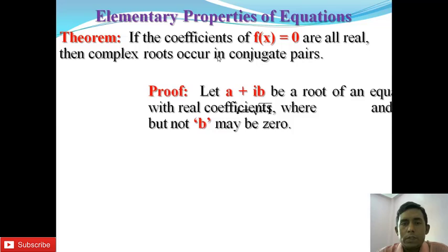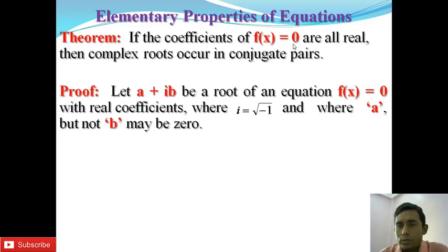This means that if there is an equation f(x) = 0, then the complex roots of the equation will always appear in conjugate pairs.